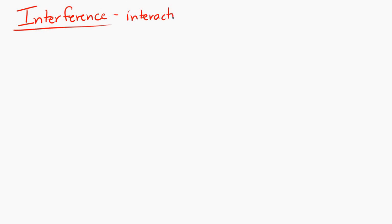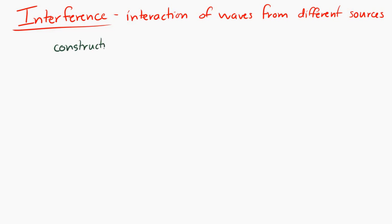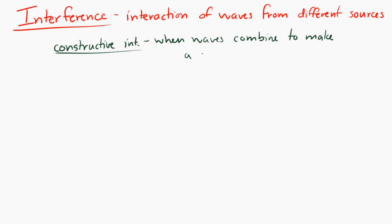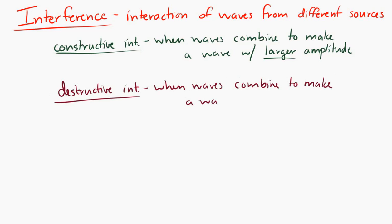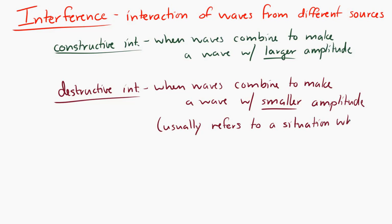Now let's take a look at interference. Interference refers to the interaction of waves at a location from two or more different sources. Constructive interference is when waves combine to make a wave of larger amplitude — two waves coming together to make a bigger wave at a certain location. Destructive interference refers to two waves combining at a location to make a wave of smaller amplitude, and specifically refers to two waves coming together to cancel each other out, making a wave of zero amplitude.